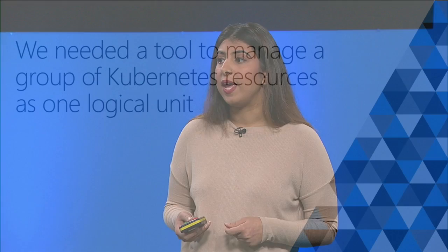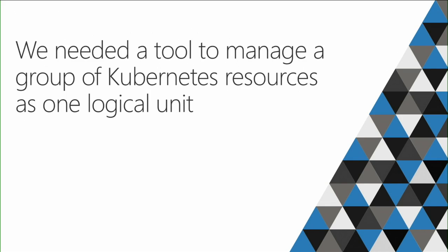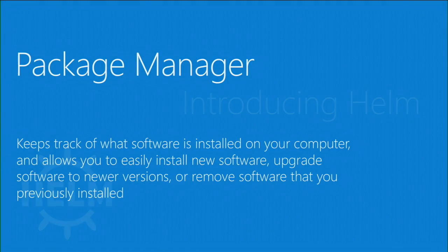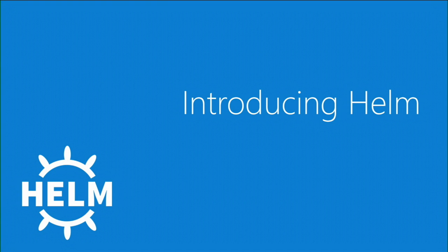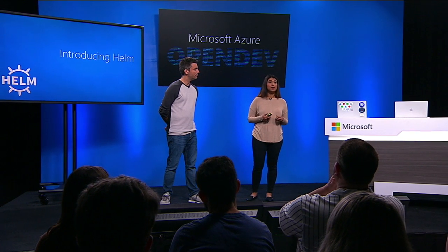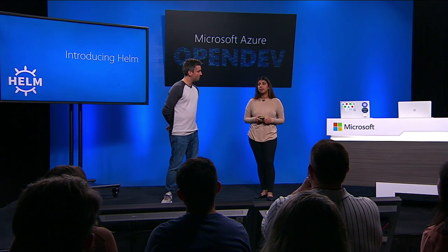We really wanted a way to install a group or package of files containing related Kubernetes resources. We wanted a way to keep track of those resources and do things like upgrade, rollback, and delete on this group of installed resources — basically treat these resources in Kubernetes like one logical unit. We realized what we need was a package manager for Kubernetes: something like apt-get, yum install, or Homebrew, but for Kubernetes — making it easy to install and manage a group of Kubernetes resource files.